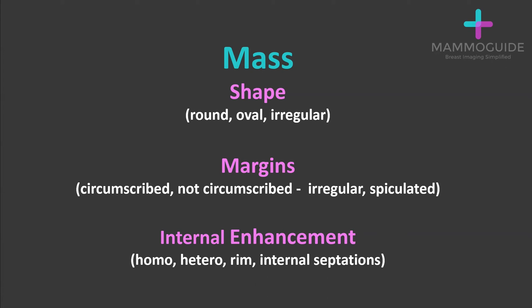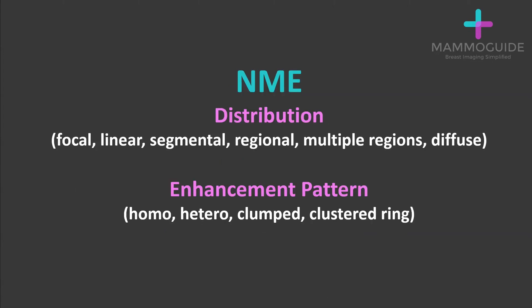Describing margins as spiculated indicates a higher level of concern than a circumscribed enhancing mass. For non-mass enhancement, you want to describe the distribution. Is it focal, linear, segmental, regional, multiple regions, or diffuse non-mass enhancement?